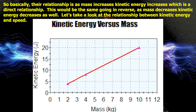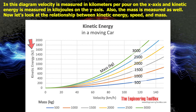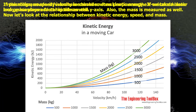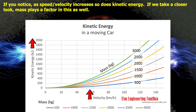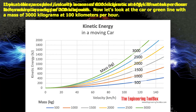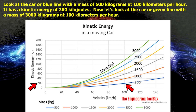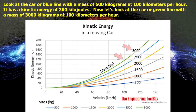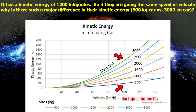Now let's take a look at the relationship between kinetic energy and speed. In this diagram, velocity is measured in kilometers per hour on the x-axis and kinetic energy is measured in kilojoules on the y-axis. Mass is also measured. As speed or velocity increases, so does kinetic energy. Look at the car represented by the blue line with a mass of 500 kilograms at 100 kilometers per hour — it has a kinetic energy of 200 kilojoules. Now look at the car represented by the green line with a mass of 3,000 kilograms at 100 kilometers per hour — it has a kinetic energy of 1,200 kilojoules.